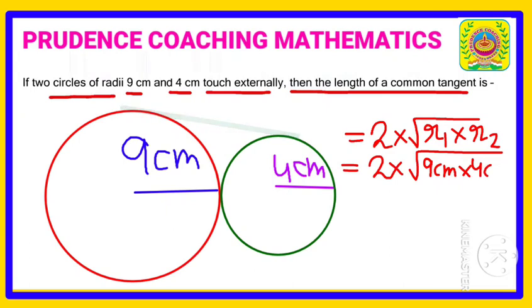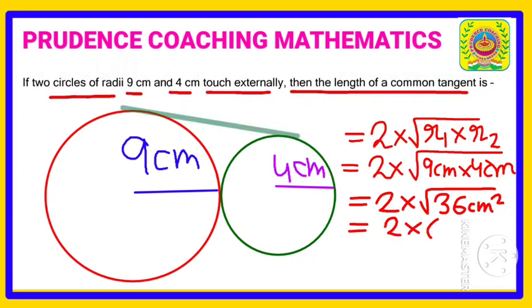value which you are getting, you need to multiply it by 2. Here, root over 9 into 4... 9 into 4 is 36, that means 6 into 6, so outside the root you will get 6 centimeters. So 6 centimeters multiplied by this 2, you will get 12 centimeters. So the length of the common tangent is 12 centimeters.